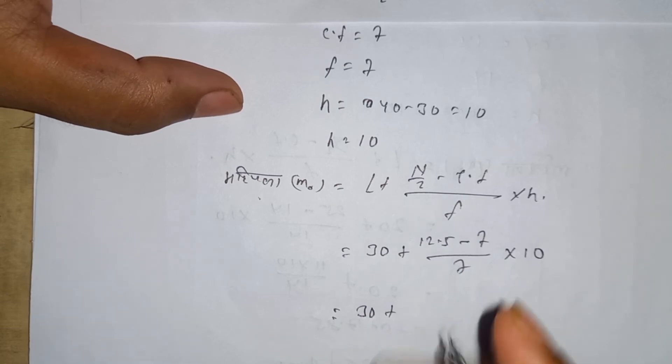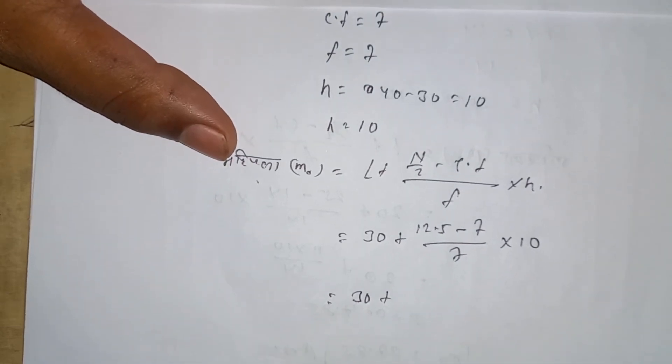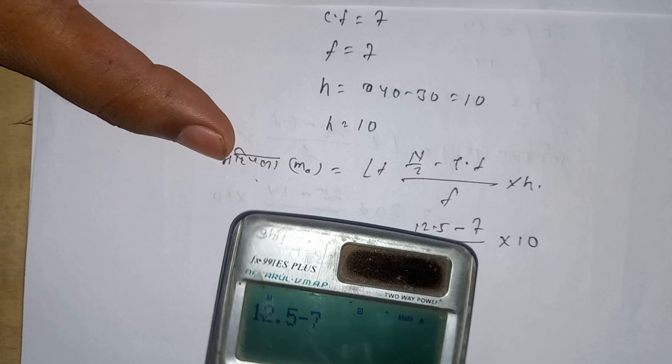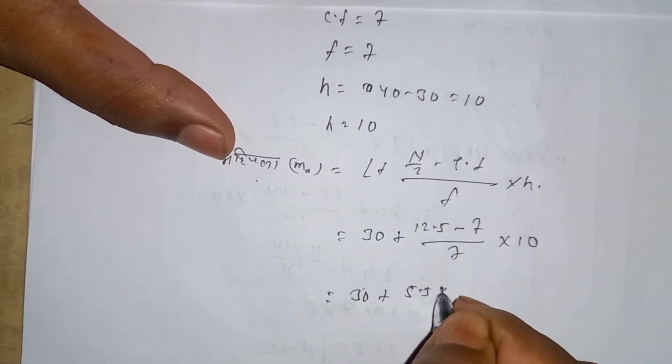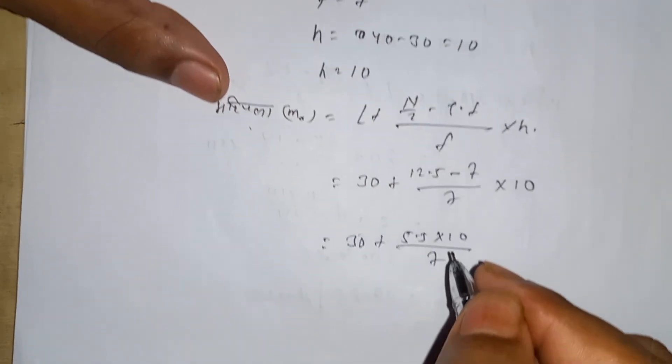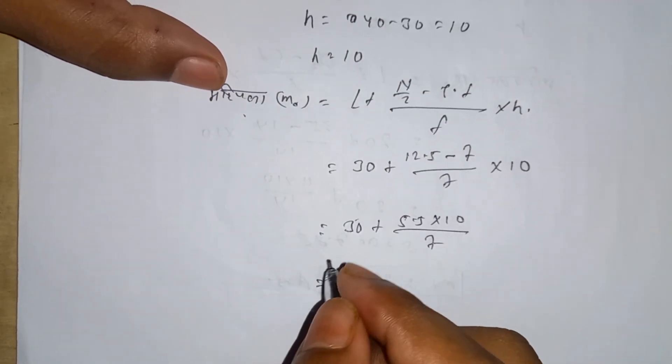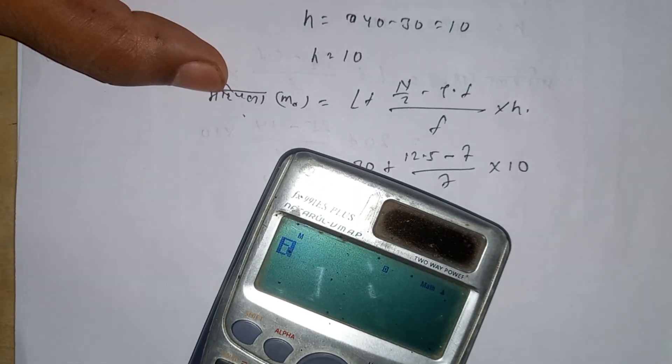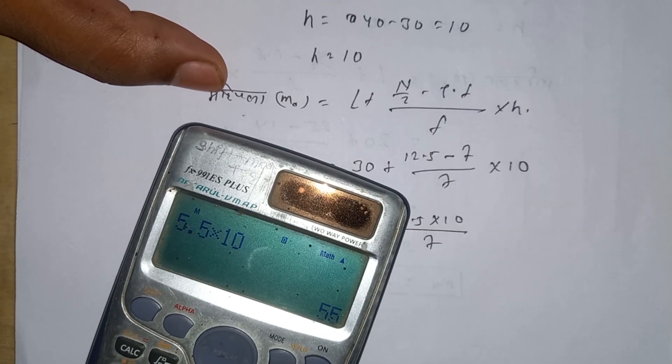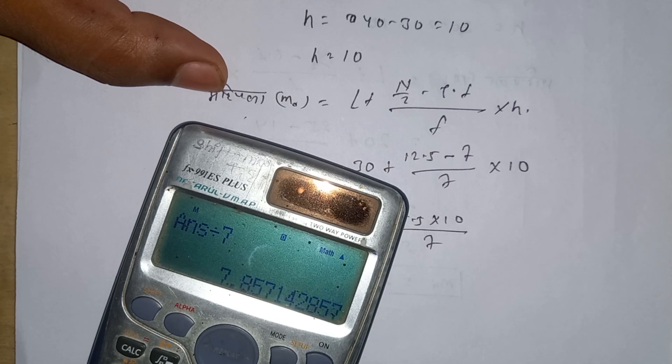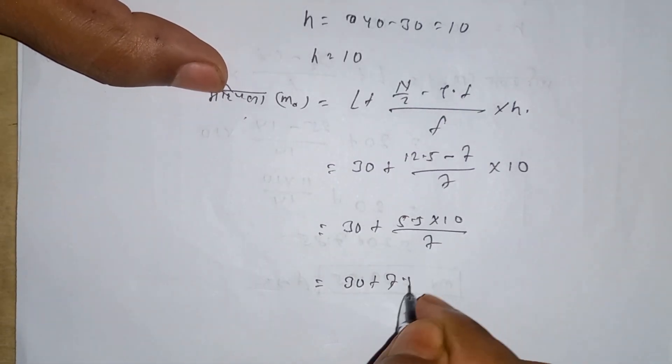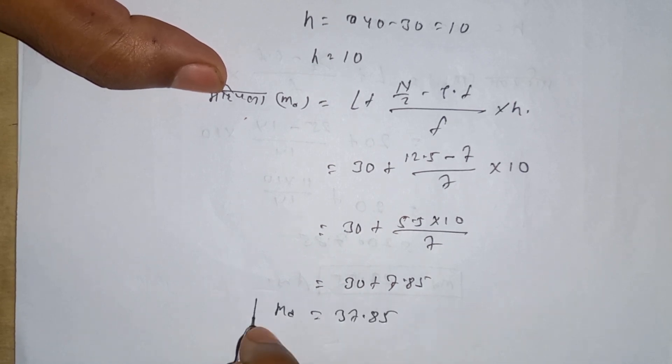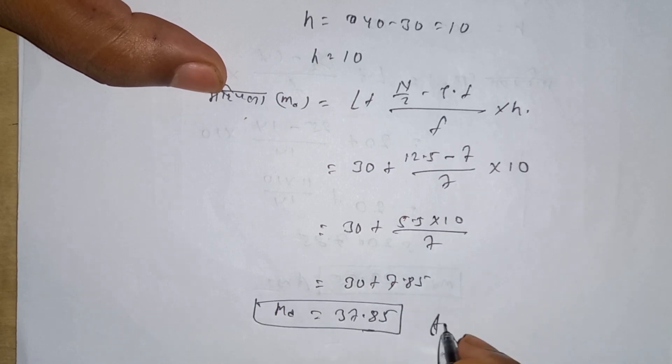This equals 30 plus 12.5 minus 7, which is 5.5, times 10 divided by 7. This gives 30 plus 5.5 times 10 divided by 7, equals 30 plus 7.85, which equals 37.85 or approximately 38. This is our answer.